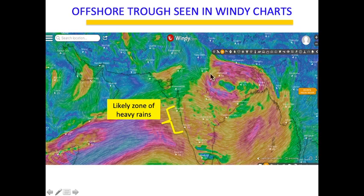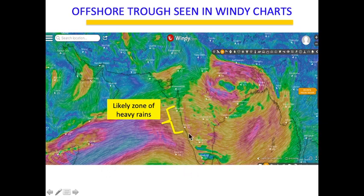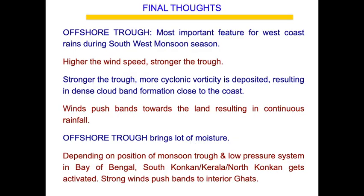The same principle applies: if the monsoon trough axis is north of its normal position, winds are pulled northward and North Konkan gets heavy rains. If the axis shifts south, winds are pulled from the south and Kerala and South Konkan receive heavy rains. The direction in which winds are pulled, determined by the monsoon trough axis, defines the likely heavy rain zone on the west coast.